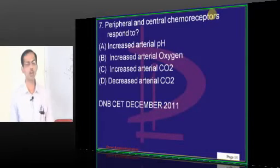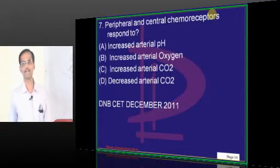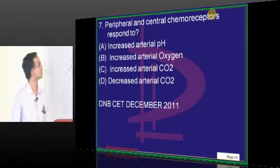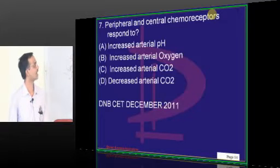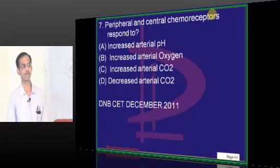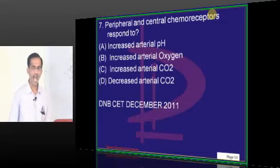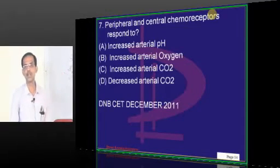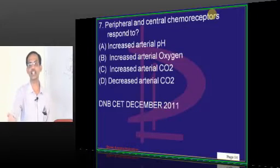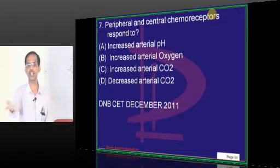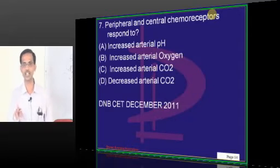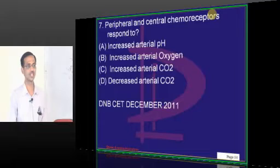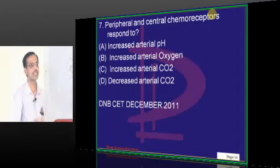Peripheral and central chemoreceptors respond to both — but which one? Increased pH, increased arterial oxygen, increased arterial CO2, or decreased arterial CO2? Hypoxia has no effect on central chemoreceptors, so increased arterial oxygen is ruled out. pH alteration occurs as a secondary effect after carbon dioxide alteration — PCO2's secondary effect is pH. So first carbon dioxide has to change. We are talking about stimulation, and all agree: increase in CO2.